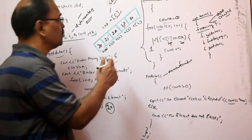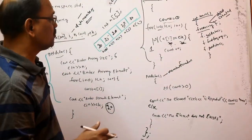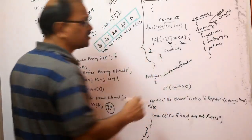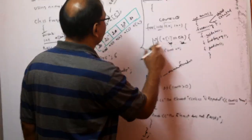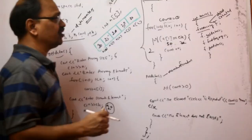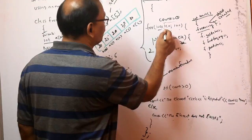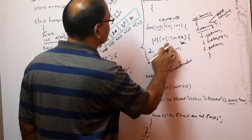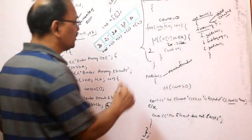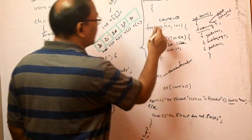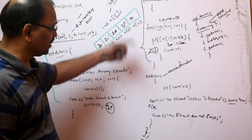i becomes 2, 2<5, condition is true. A[2] is 20, search element is 20, 20 is equal to 20 — condition is true. Previously count was 1, now it becomes 2. i becomes 3, 3<5, A[3] is 30, 30 is not equal to 20 — skip, count remains 2. i becomes 4, 4<5, A[4] is 20, 20 is equal to 20 — condition is true, count becomes 3. i becomes 5, 5<5 is false — exits the findFrequency function, and we go back to putData.